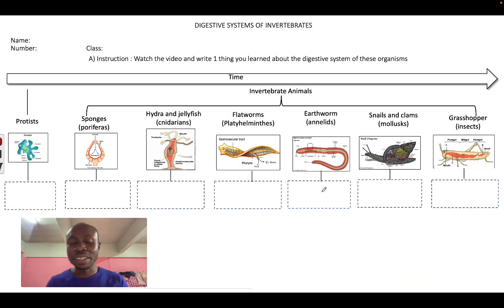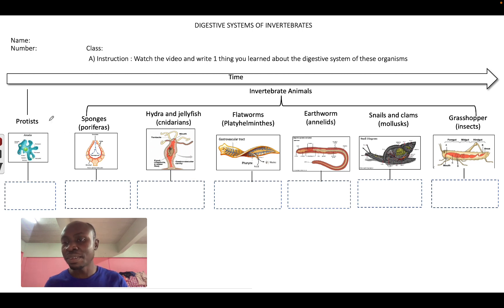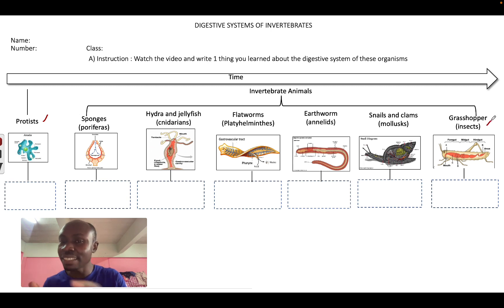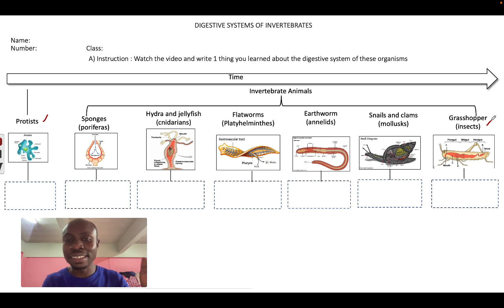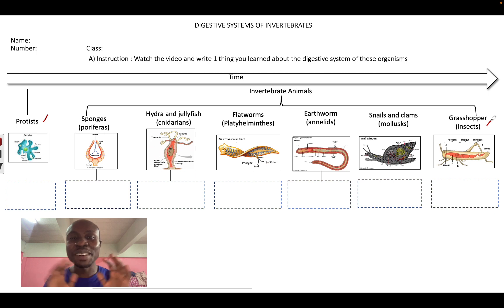So far we've learned about the different digestive systems in different organisms, starting from protists to insects. We can see that the digestive system has evolved and become more and more advanced over time. Thank you very much for watching and I hope this is helpful.